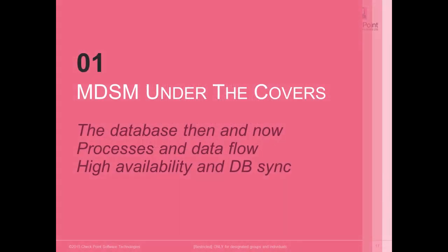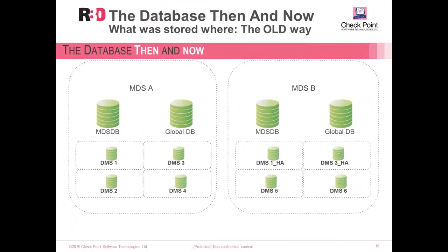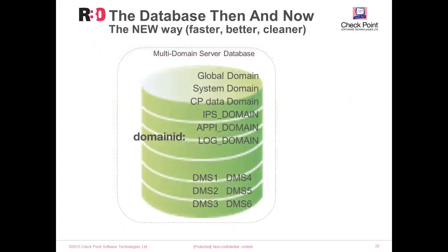In the first part of the first chapter, MDSM under the covers, we're going to talk about the database then and now. In the past, on a multi-domain server, we had multiple different files and databases — one file for the MDS database, another for the global domain database, and unique database files for each user domain, also called domain management servers. In R80, everything is stored within one database, the PostgreSQL database, and the different domains are separated with domain IDs inside this database.